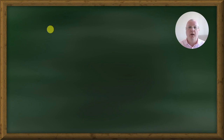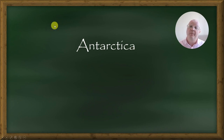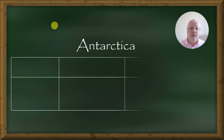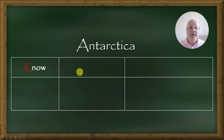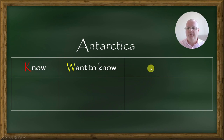Let me give you an example. You want to start with the lesson topic, so the first thing you want to do is write it down on your blackboard. In my case, it's going to be Antarctica — one of my lessons. Then you want to draw a chart on your blackboard. At the top of the first column, write the word know. Above the middle column, write want to know. And above the third column, write the word learned.